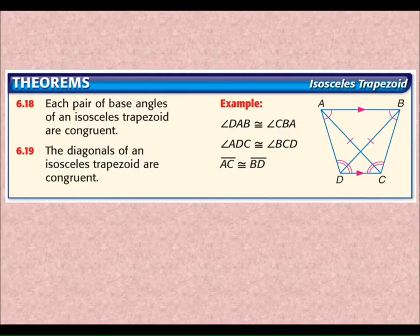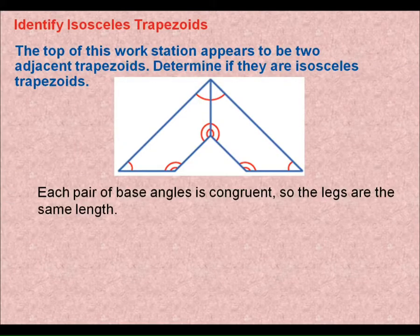The theorems we have about trapezoids, in this case an isosceles trapezoid, is each pair of base angles are congruent. So the angles here and here are congruent in an isosceles trapezoid, and the diagonals of an isosceles trapezoid are congruent. Now, this is only for an isosceles trapezoid. If it's not an isosceles, these don't apply. Each pair of base angles are congruent, and the diagonals are congruent, just like in a rectangle or square—diagonals are congruent.